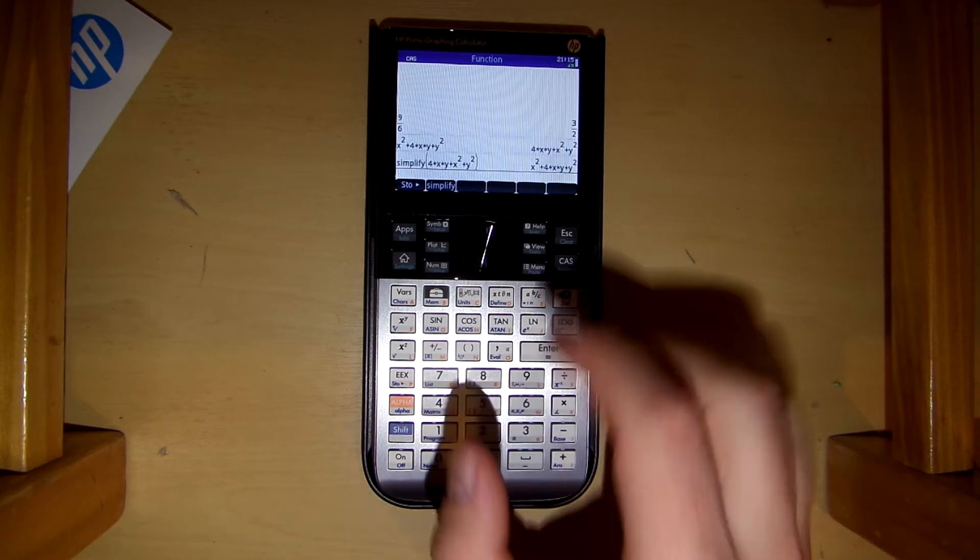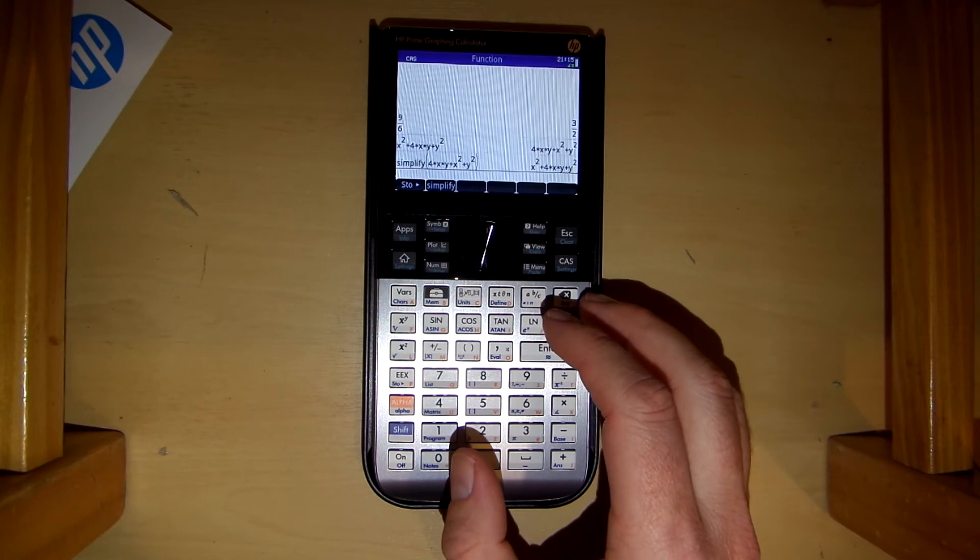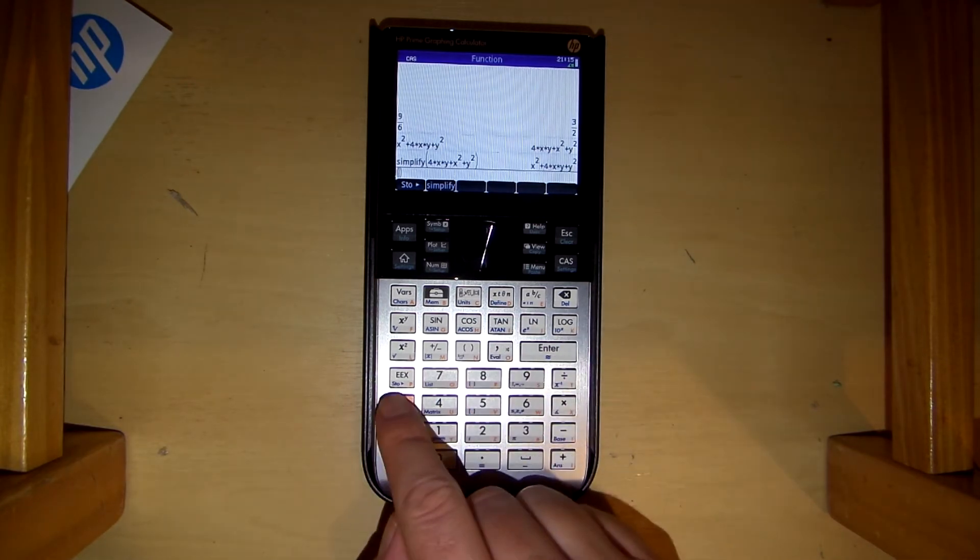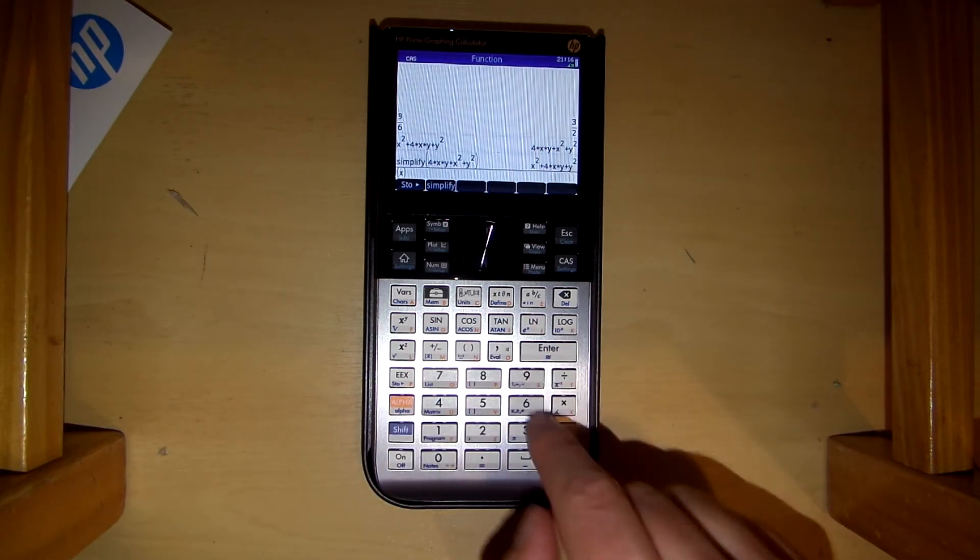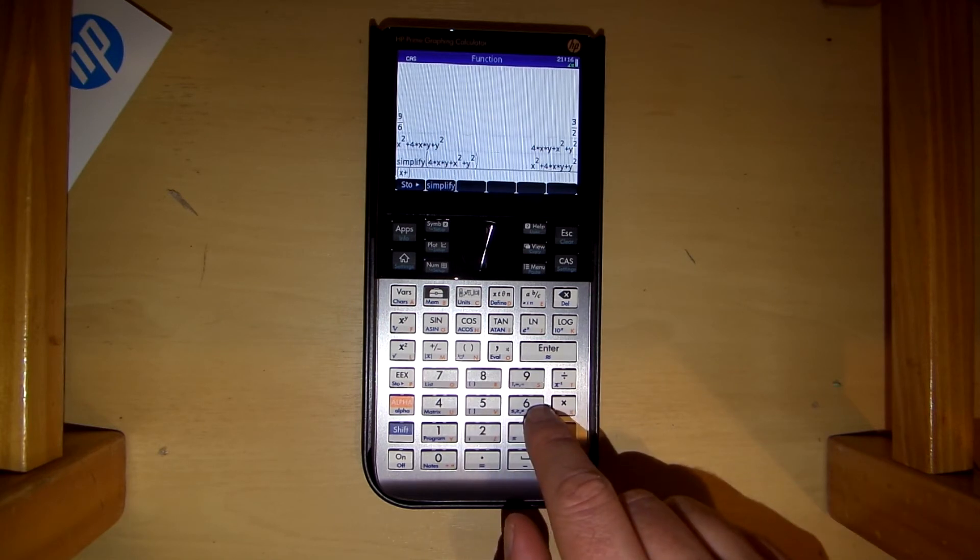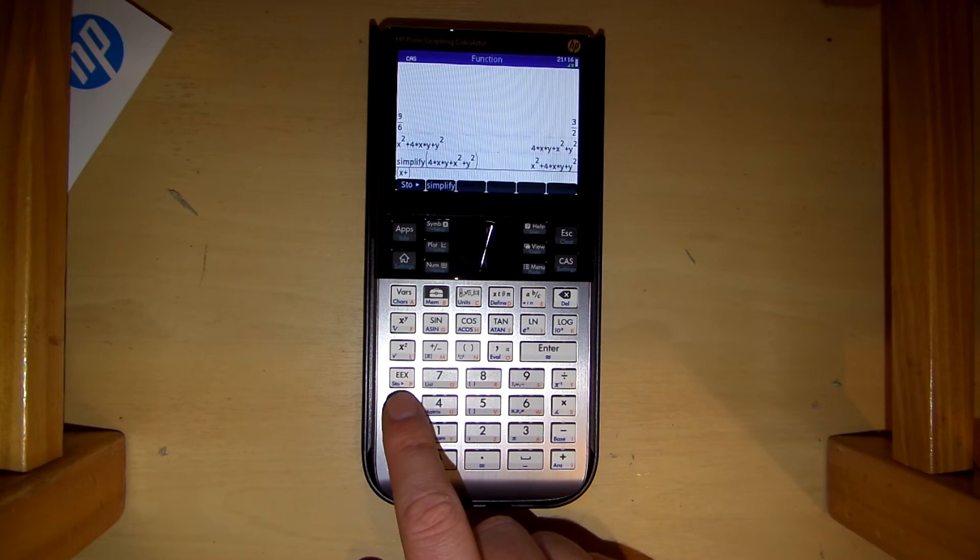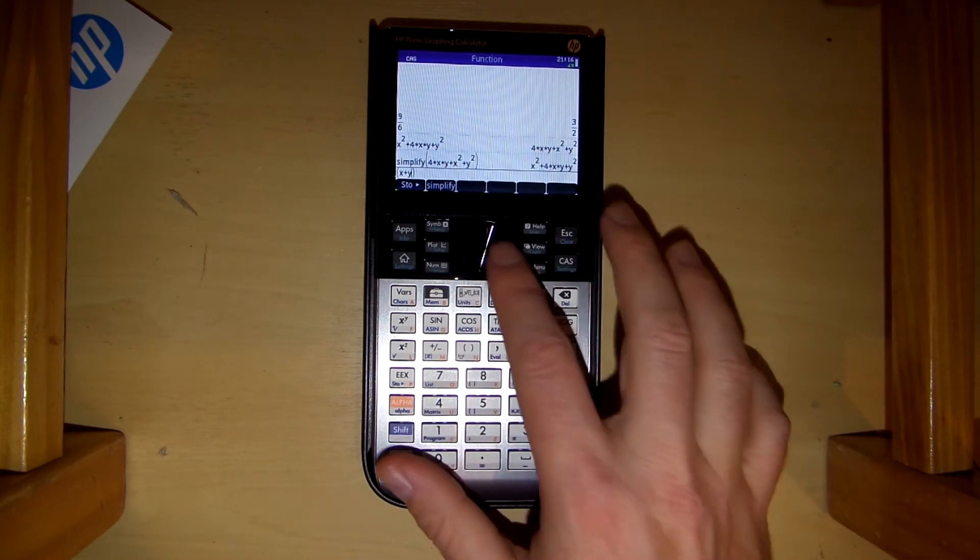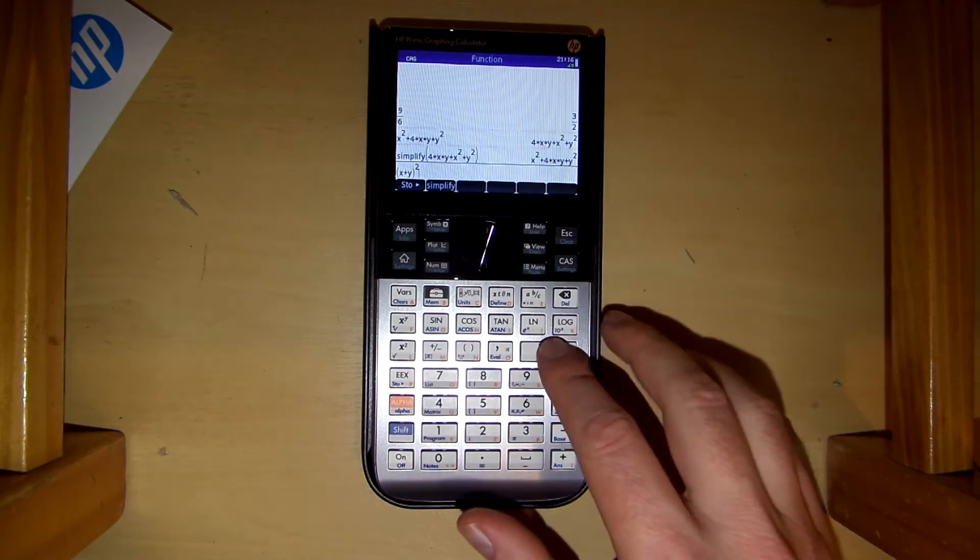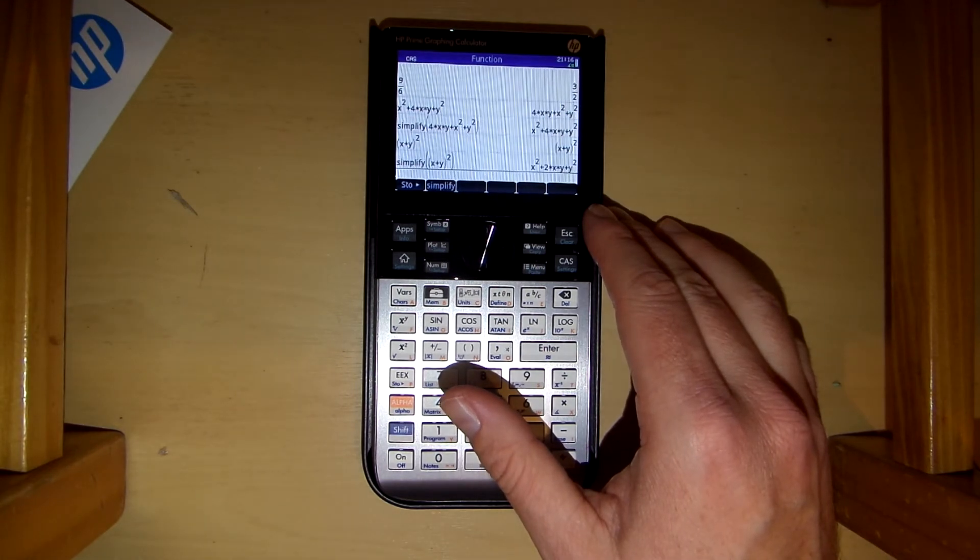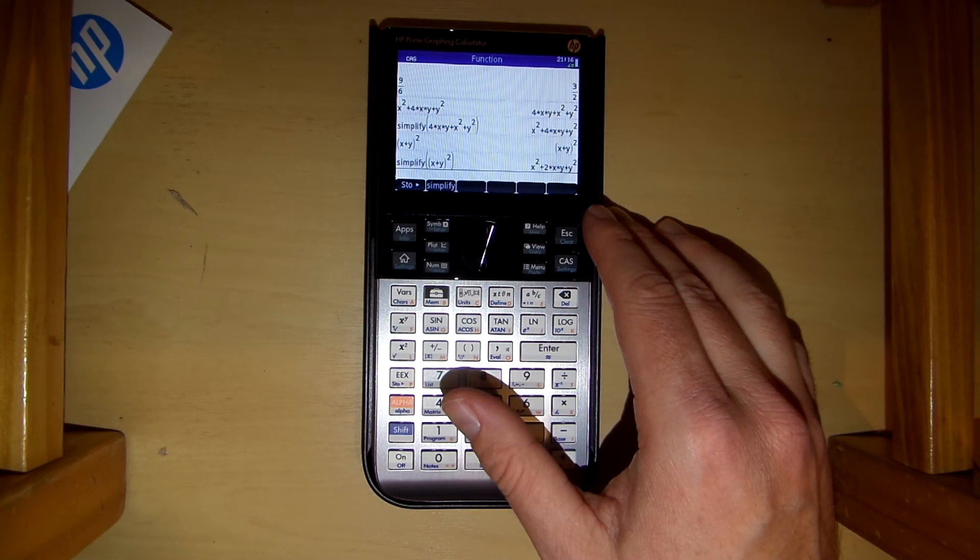I did this a little bit wrong. So what I meant to do I believe is this. I think it's this. Is x plus, yeah x plus, I'll just do this. Is x plus y squared. Squared. Enter. Simplify. And then you can see it does that for you. It's kind of neat. So yeah it's a nice calculator. It does quite a few things.